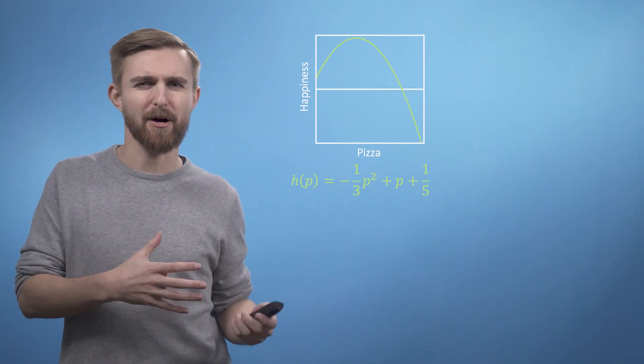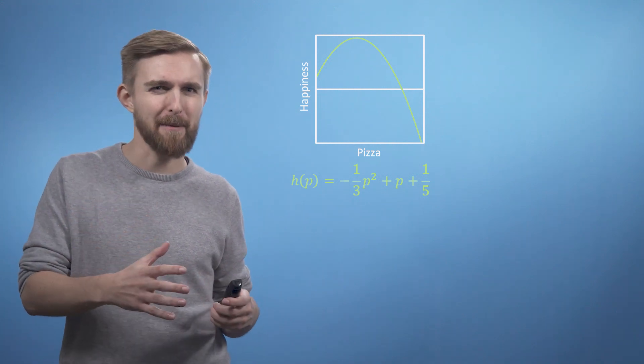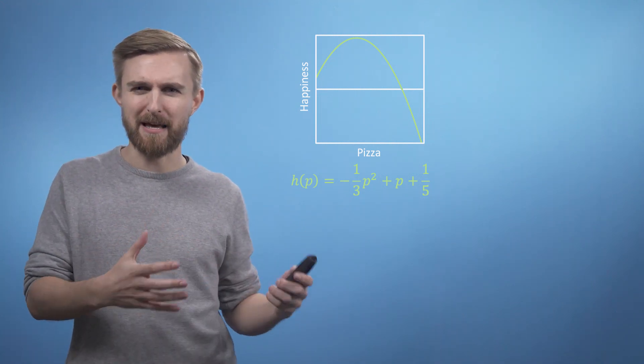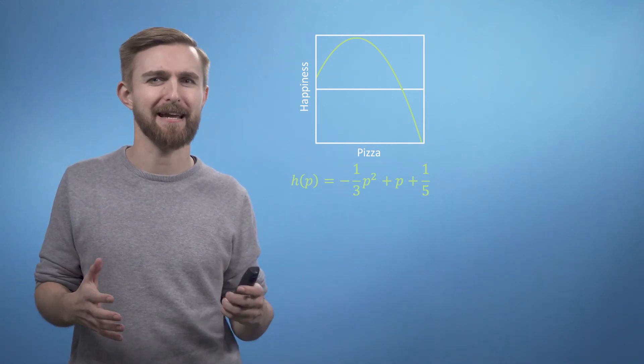What we can see is that although without any pizza, it's still possible to be happy in principle, my peak happiness is with about one and a half pizzas. Any more pizza than this and I become less happy, and then beyond about three pizzas, my happiness becomes rapidly negative.